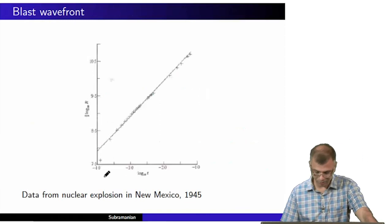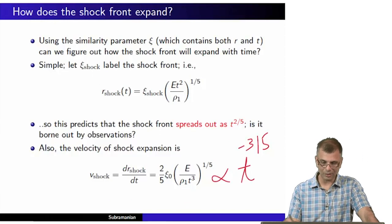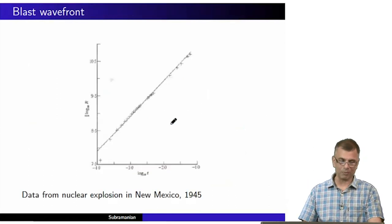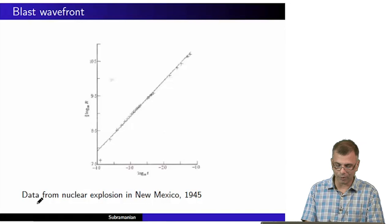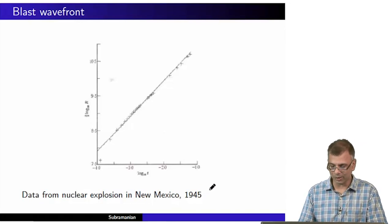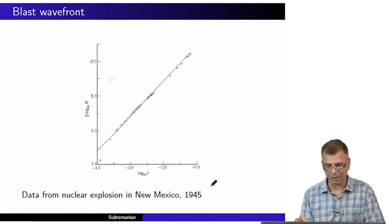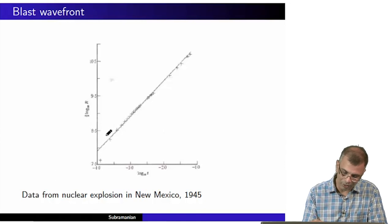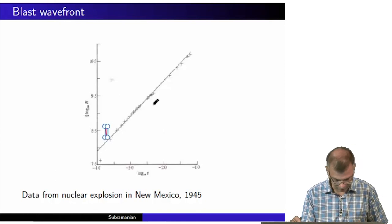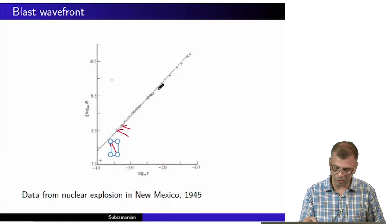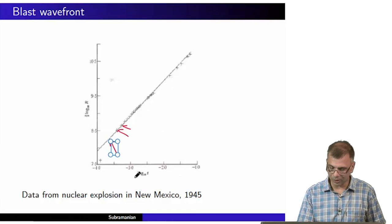This is data — very recently declassified data from a nuclear explosion in New Mexico in 1945, around the time that the Second World War ended. The x-axis is log₁₀(t) and the y-axis is (5/2) log₁₀(R). There are many data points — crosses — plotted here.